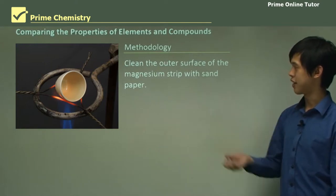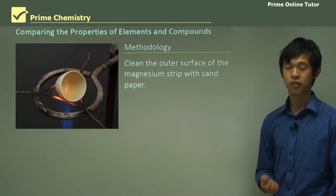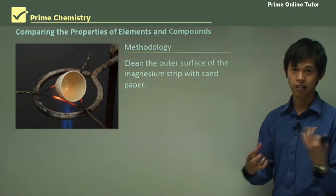So what we do first is we clean the outer surfaces of the magnesium with the sandpaper. And the reason we do that is so that the oxygen in the air can actually get at the metal inside.